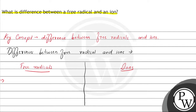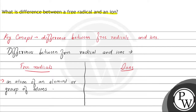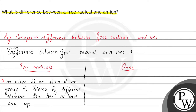Free radicals are an atom of an element, or a group of atoms of different elements, jinn ke paas ek unpaired electron present hota hai — that has at least one unpaired electron present.